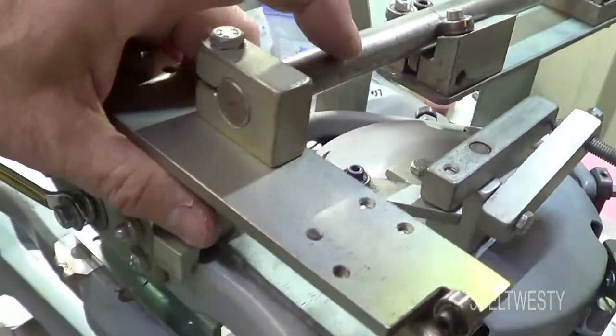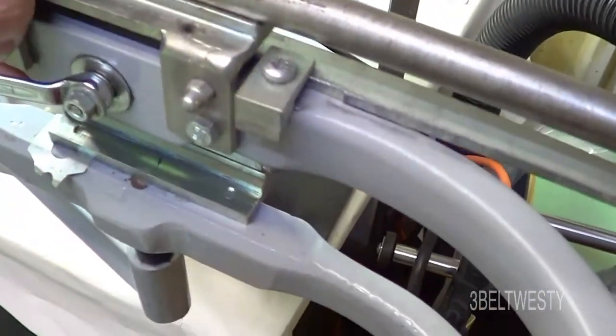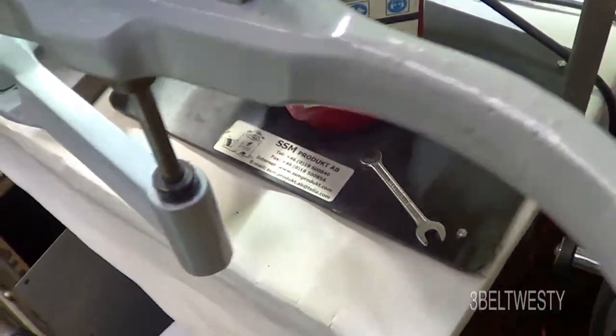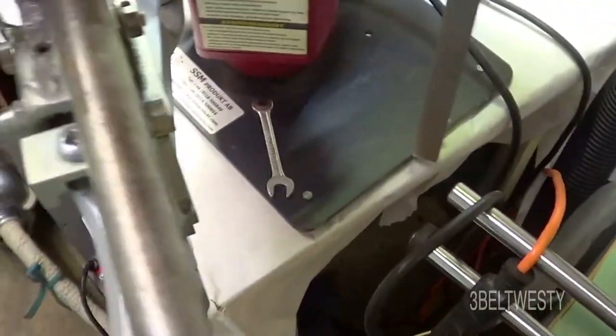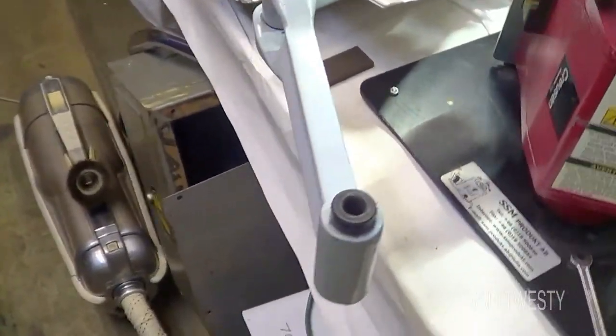I'm getting down toward the diameters getting down here on this. Normally, you take this and flop it over. And you take this thing and you pull it out. First, I'm going to take this out. And I'm going to pull this beast out of here. And there's the swing arm.